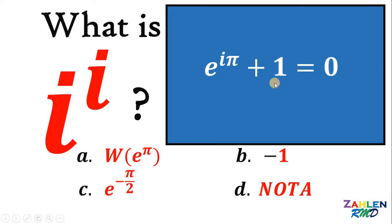Now, we will use this equation to find the value of i raised to i. To do that, let's subtract 1 on both sides. So, we have e raised to iπ equals negative 1.